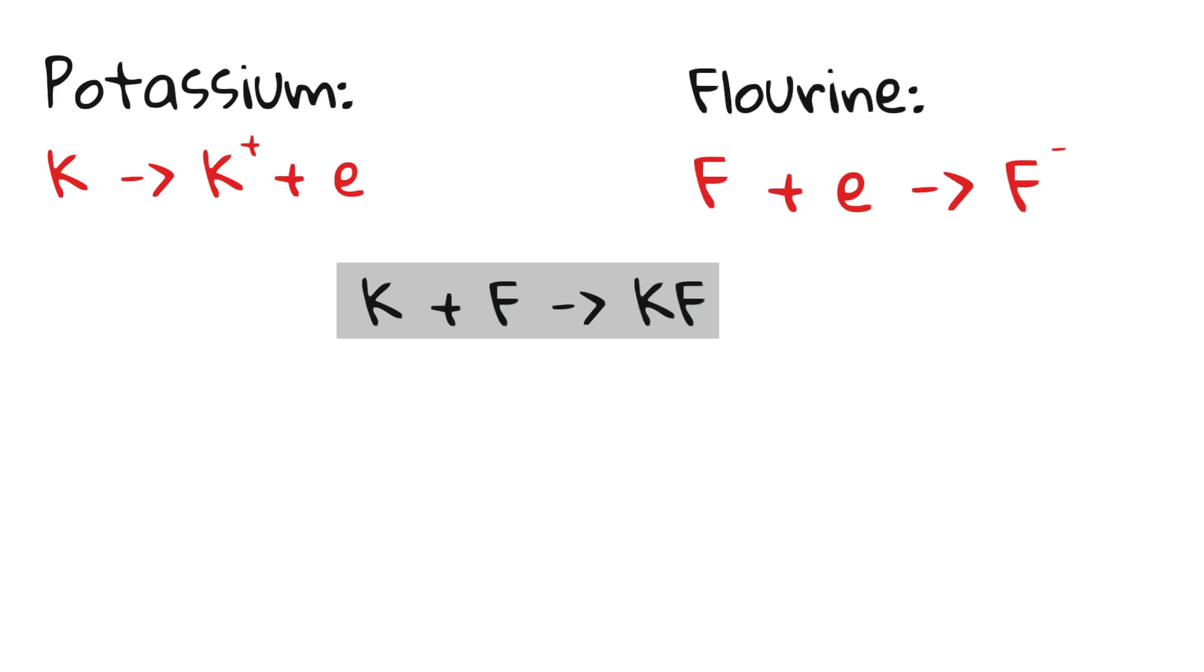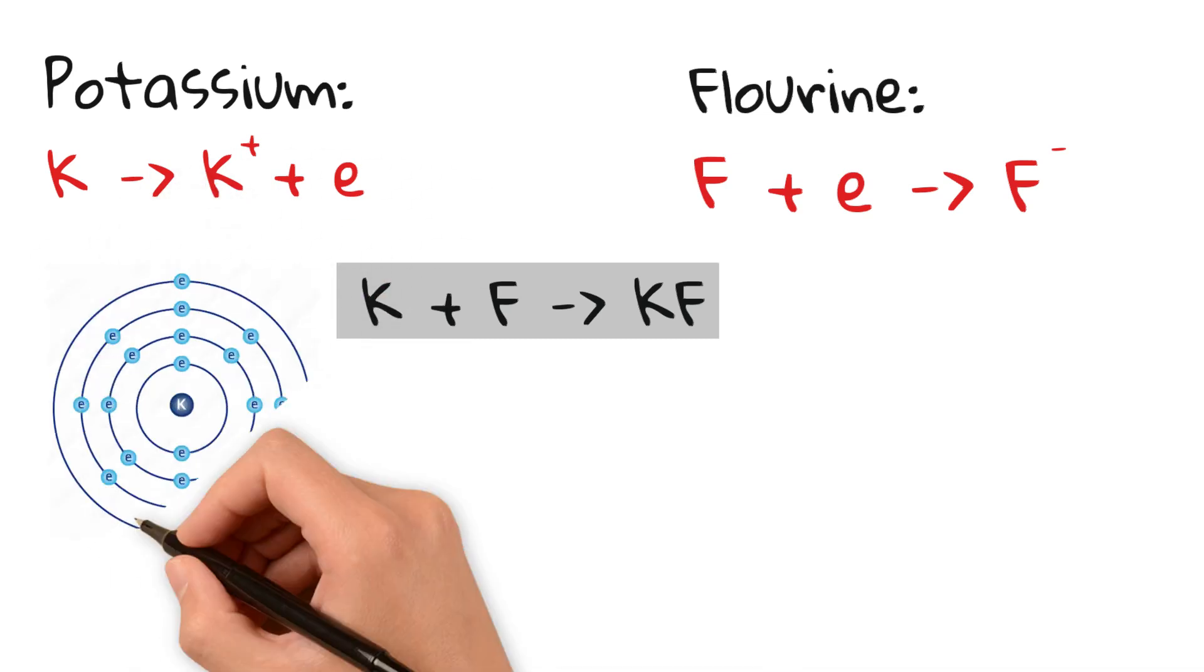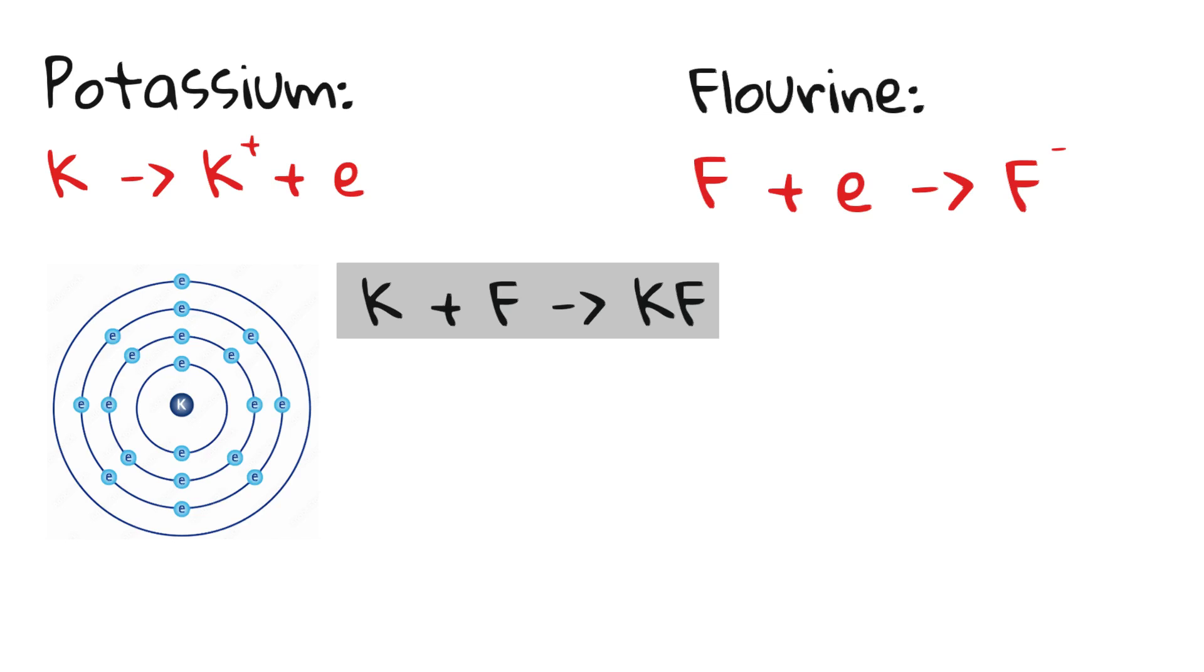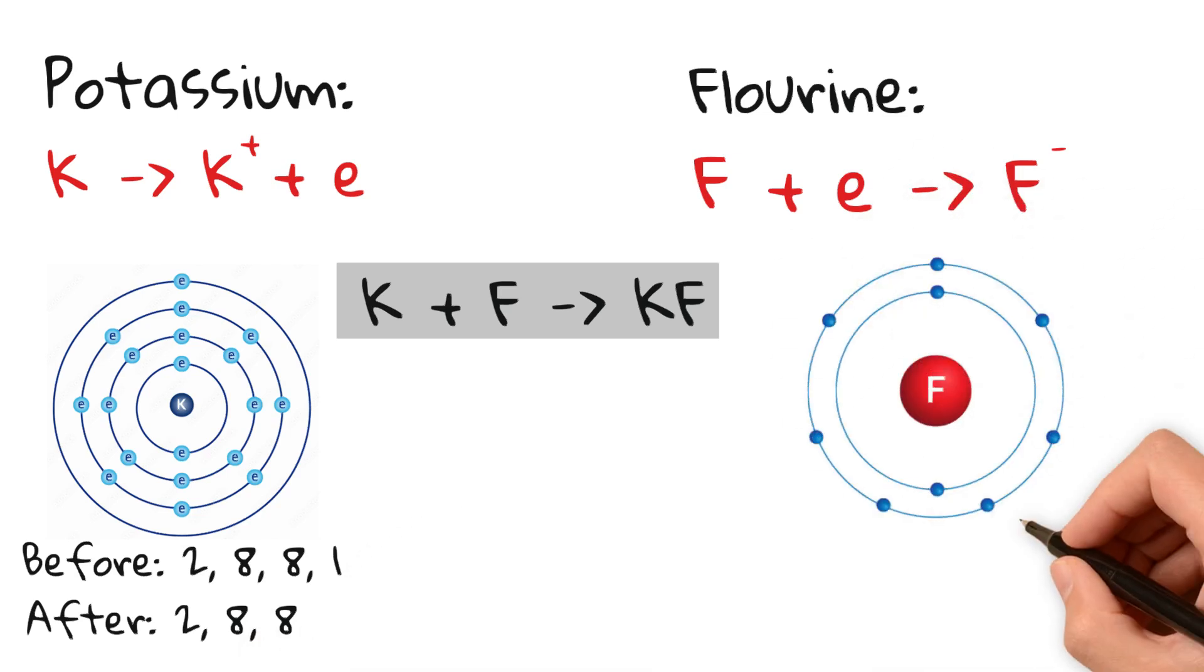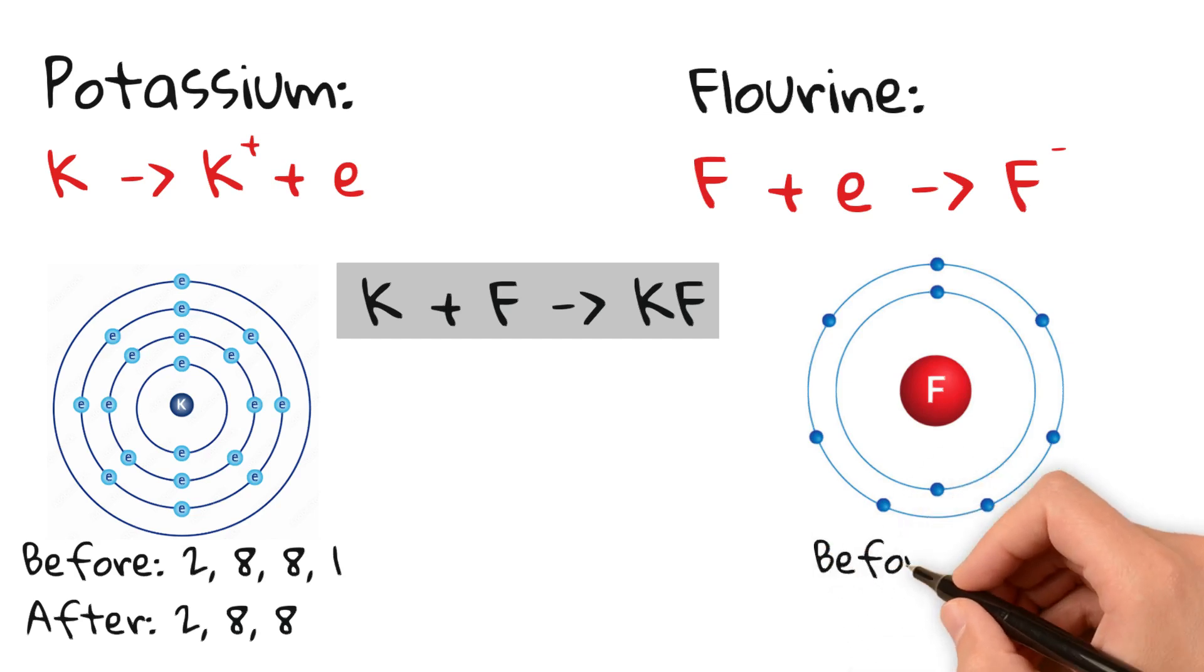Now, let's look at the electron configurations. Potassium is in period four and group one. That means it has three fully filled shells and its outermost shell has one valence electron. So its configuration is 2-8-8-1. After losing one electron, the fully filled shell underneath is exposed. Its electron configuration therefore is 2-8-8. Fluorine is in group seven and period two. So its electron configuration is 2-7. After gaining one electron, it becomes 2-8.